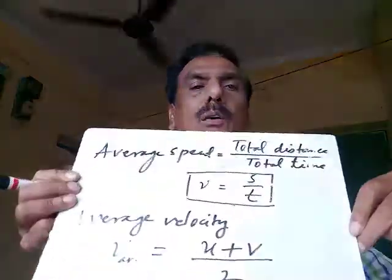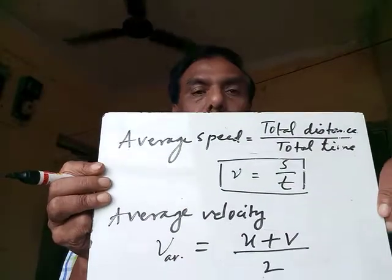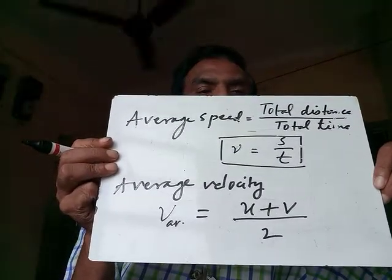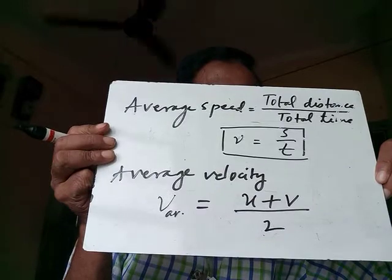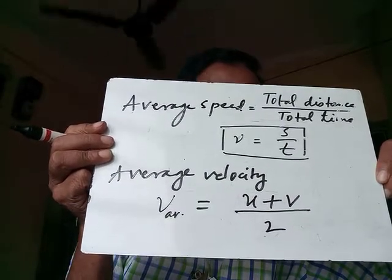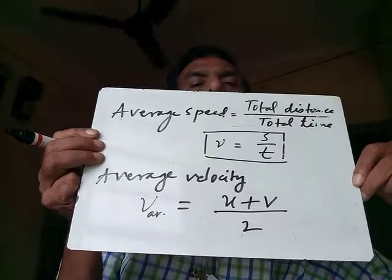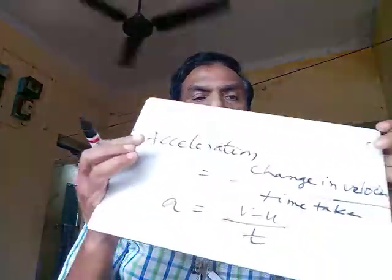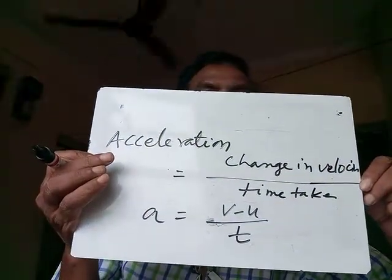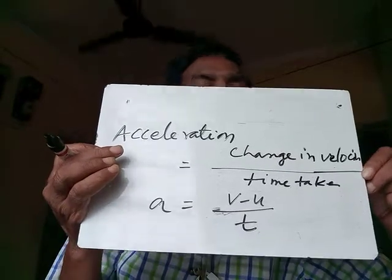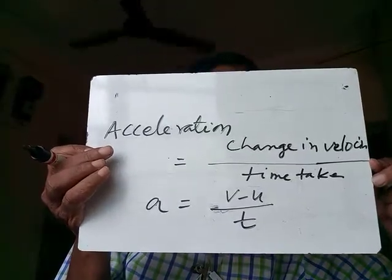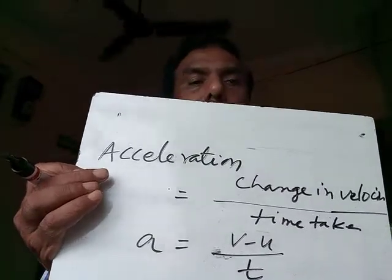So we can measure acceleration. The average speed and average velocity — how to find them — is now clear. The rate of change of velocity is called acceleration, and it is represented as a = v minus u divided by t. That's all for today.